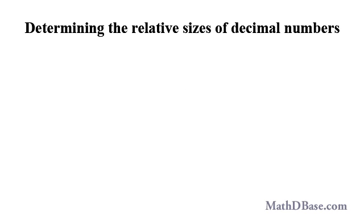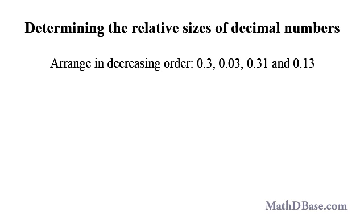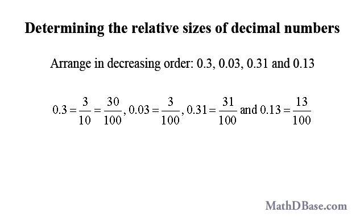To determine the relative size of two decimal numbers, compare the values of each digit in the numerator after writing them in terms of the same denominator. To arrange 0.3, 0.03, 0.31, and 0.13 in order of decreasing size, first write each number as an equivalent fraction with a denominator of 100, then compare the numerators.